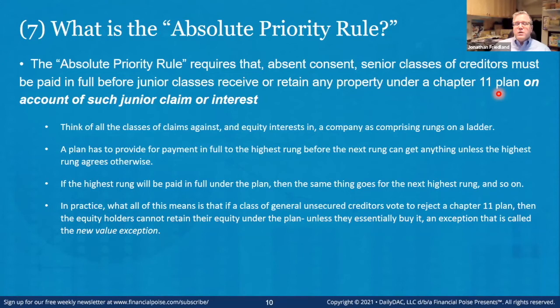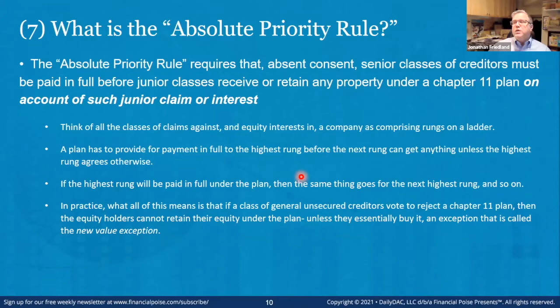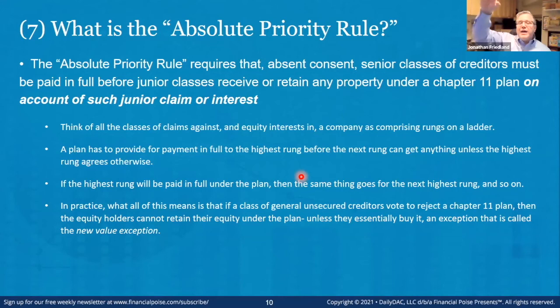But there are exceptions — you can negotiate a different result. The main exception is the new value exception, referenced in the last line of the last bullet point. There are ways to keep your distribution notwithstanding the fact that it's not in the order of absolute priority.